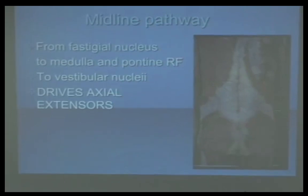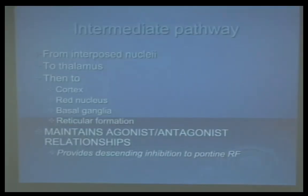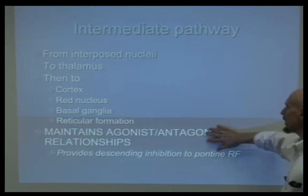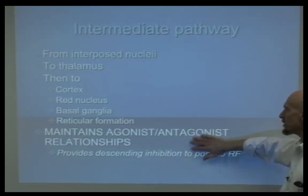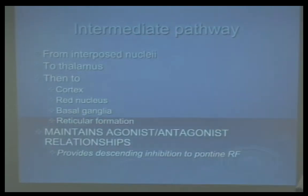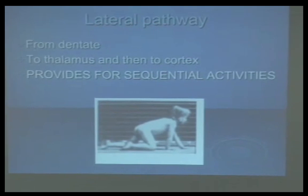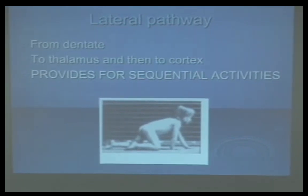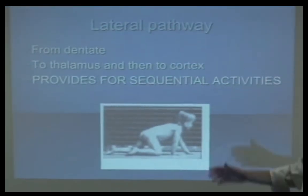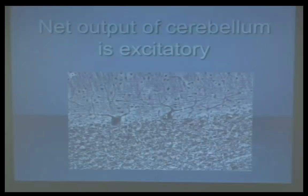The intermediate pathway maintains our agonist-antagonist relationships and has a lot to do with muscle spindle tone through inhibitory connections with the reticular formation. The lateral pathway provides for sequencing of activities — things like gait and being able to dress yourself.